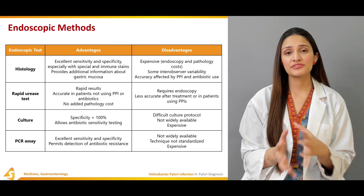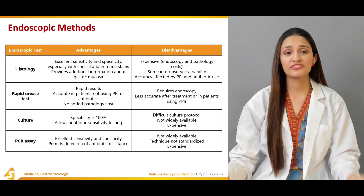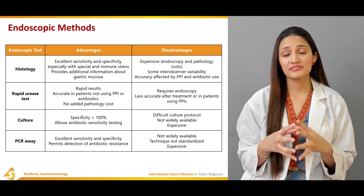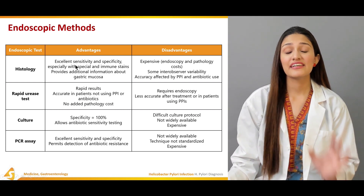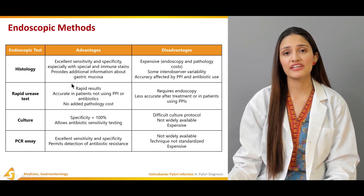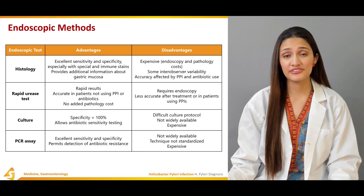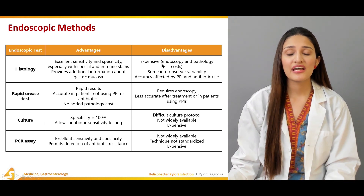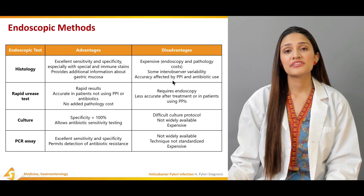The endoscopic methods for diagnosing H. pylori infection include histology. Using an endoscope and taking a biopsy sample, histology can be sent to a microbiologist. Its advantages are excellent sensitivity and specificity with special and immune stains, and it provides additional information about the gastric mucosa, including signs of progression toward gastric cancer. The disadvantage is that it is very expensive due to the endoscope and pathology costs, and accuracy is affected by proton pump inhibitor and antibiotic use.